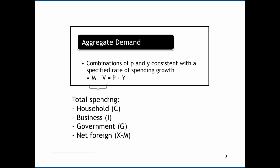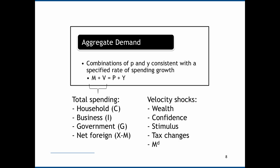If we split total spending up into its various parts — household spending (consumption), business spending (investment), government spending (G), and net foreign spending (X minus M) — then anything that causes changes to these other than M is captured by what we refer to as velocity. For example, we can think of wealth shocks: if there's an increase in wealth, if people feel wealthier, then this is going to probably cause consumption to go up.